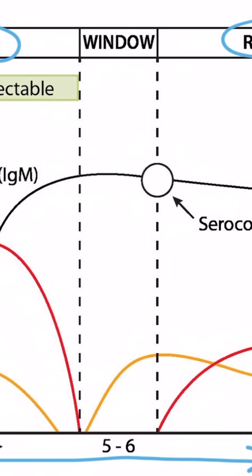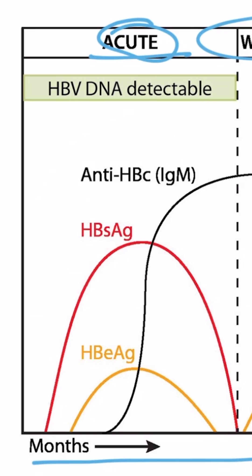Now notice that between the acute phase and the recovery phase, there's a window phase. So those are the three stages. Going back to the acute phase, notice that there is DNA detectable. And then starting from time zero, the first thing we see is this red line, which is the surface antigen. Then we have the E antigen, and then antibodies against the core.